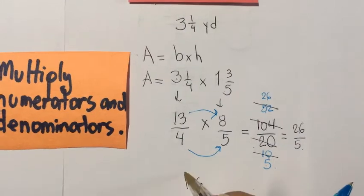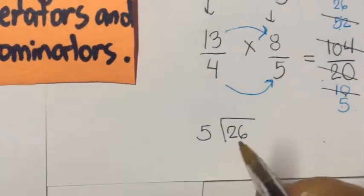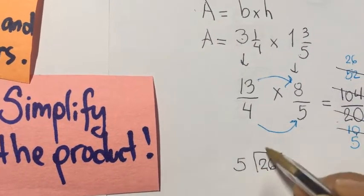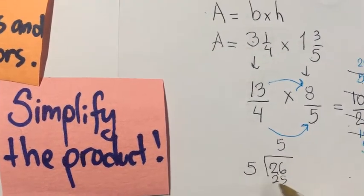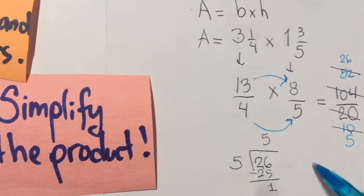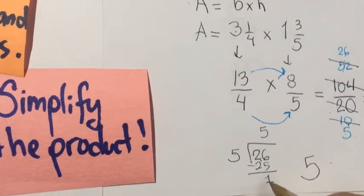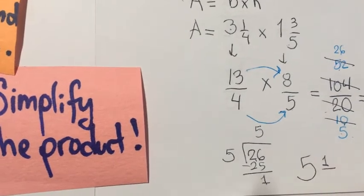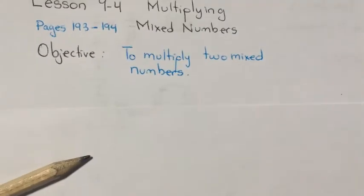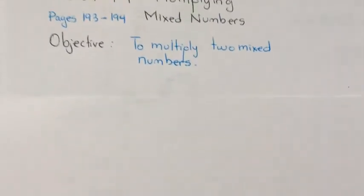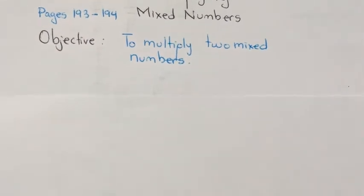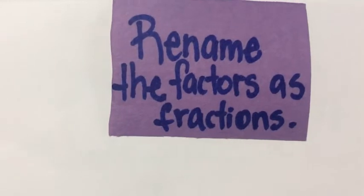We always need to simplify the product. 26 divided by 5: how many times does 5 go into 26? 5 times — 5 times 5 is 25. Subtract: remainder is 1. Remember how to write a mixed number — the quotient is the whole number, the remainder is the numerator, and the divisor is the denominator. So the answer is 5 and 1/5.